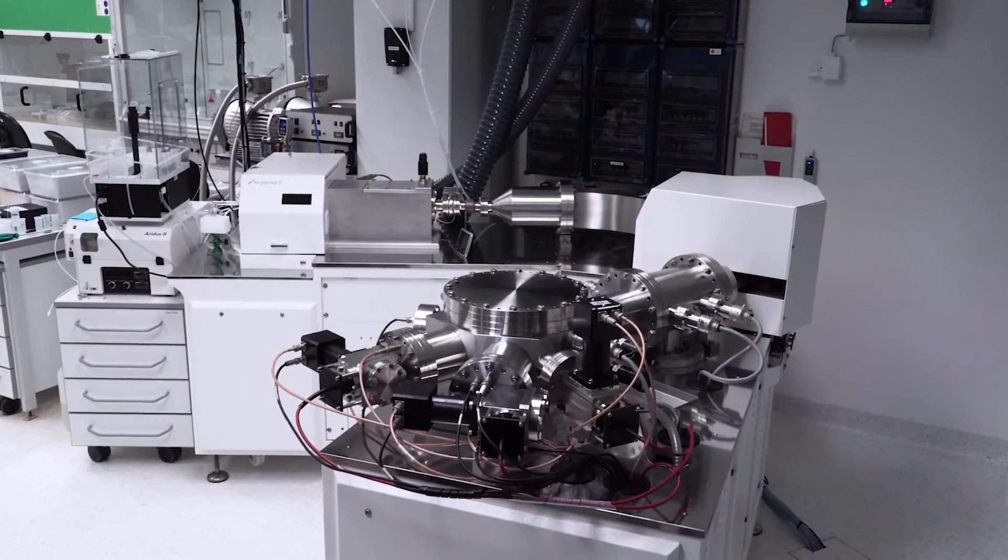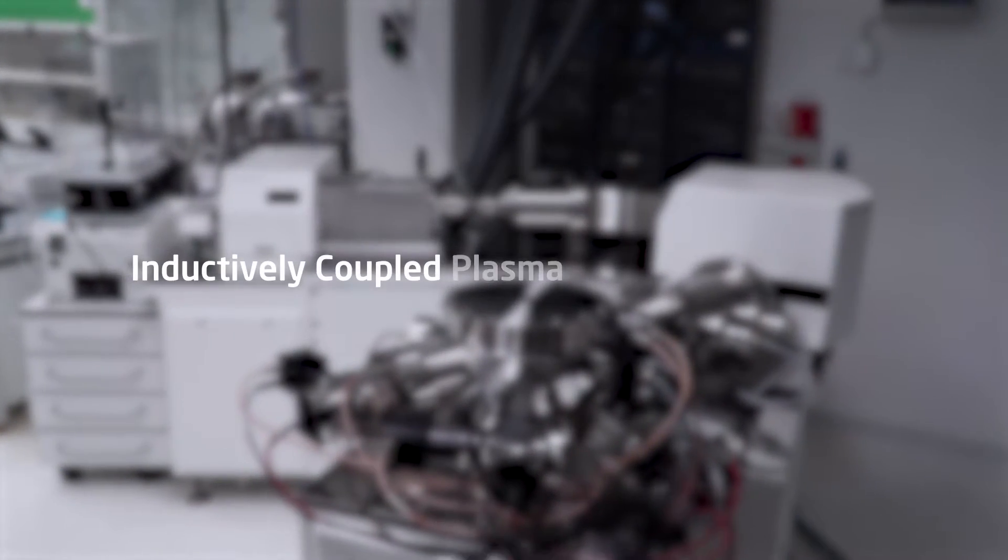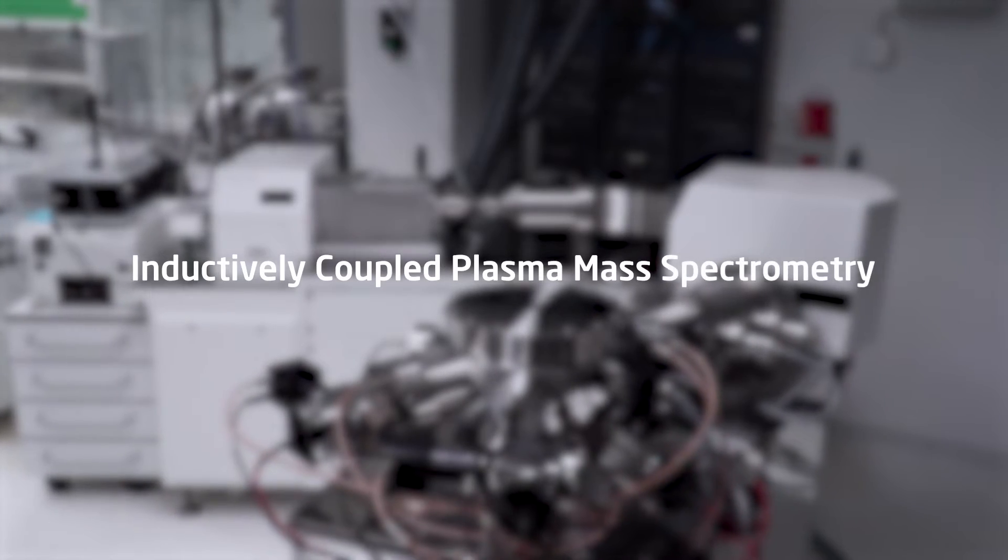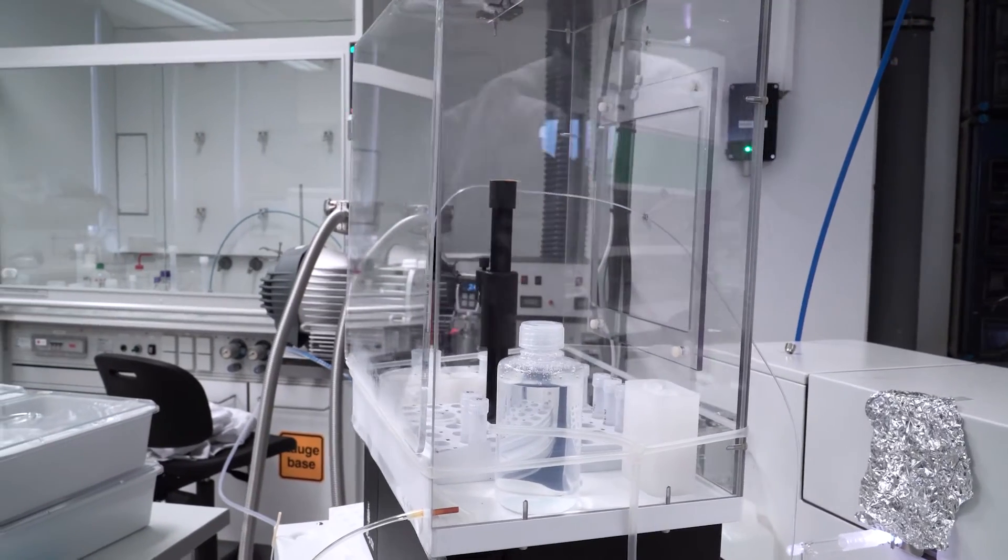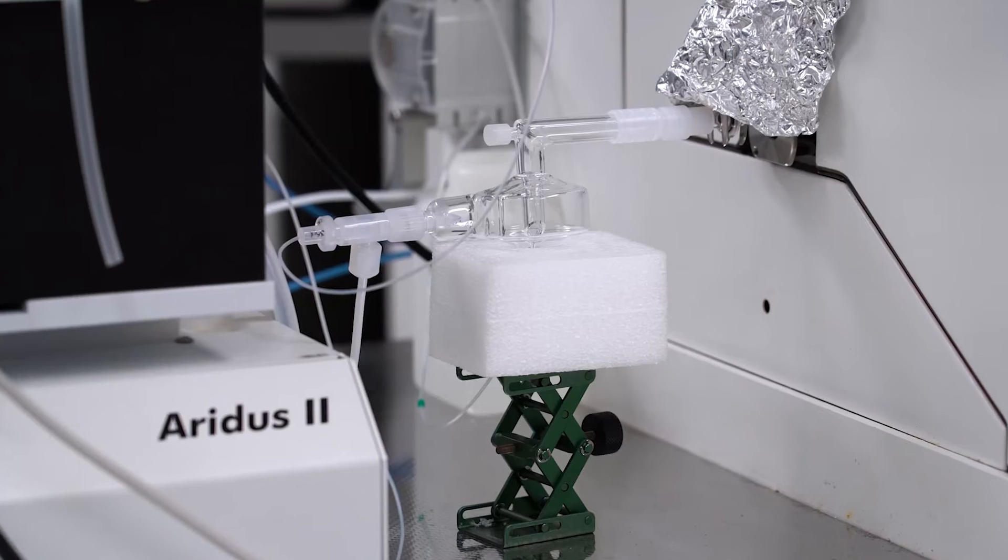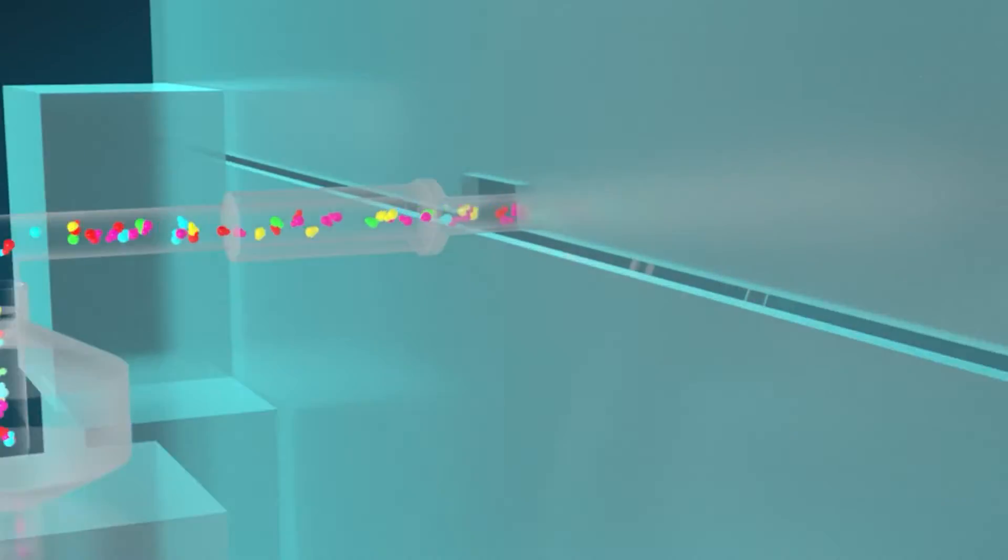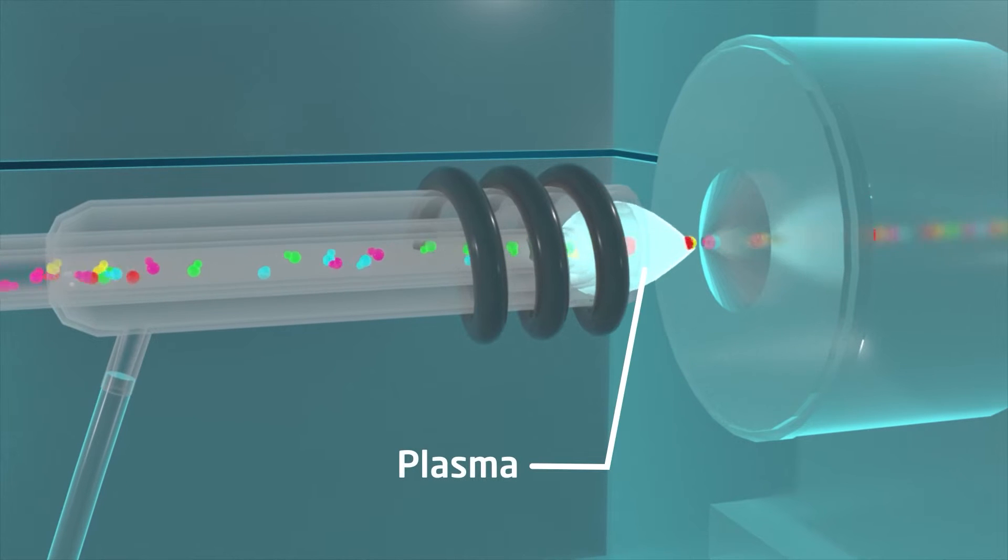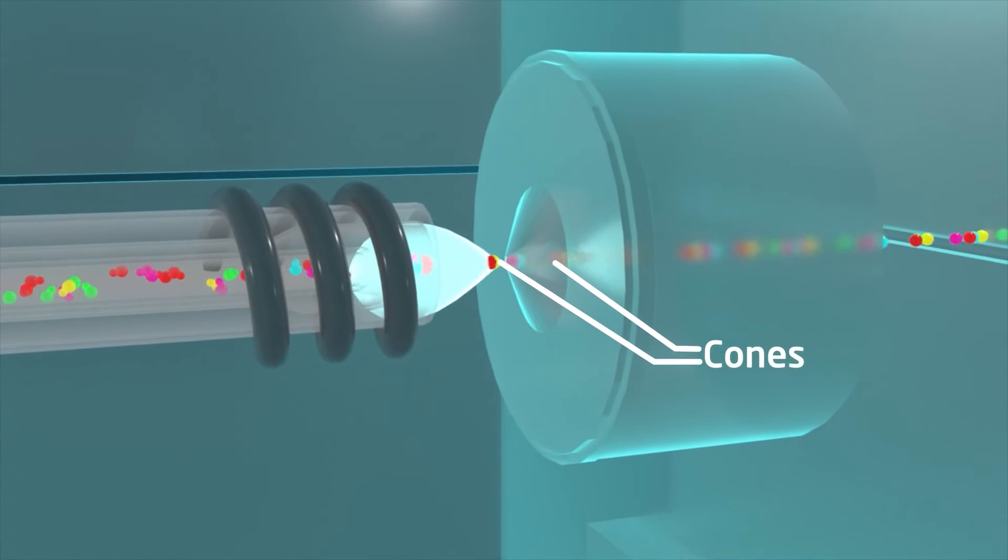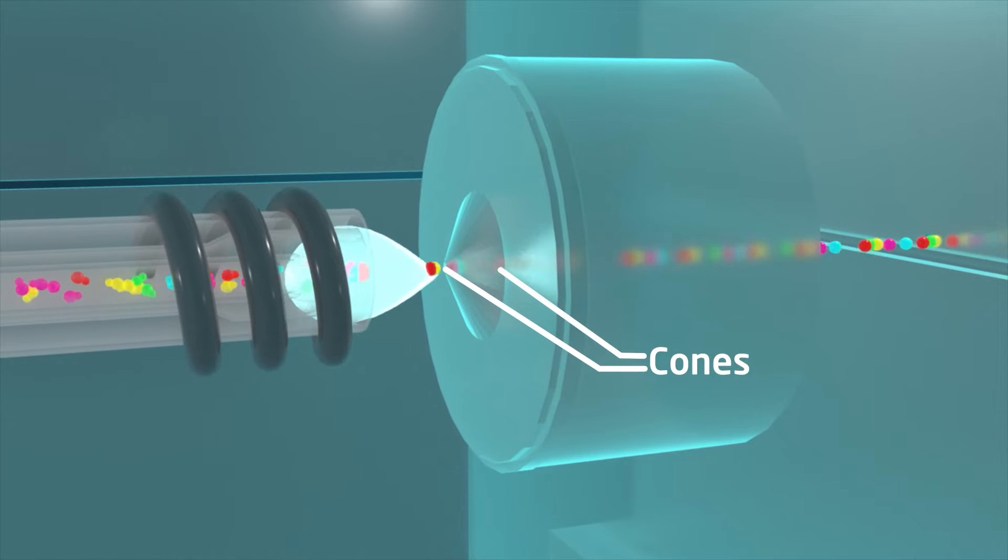ICP-MS stands for inductively coupled plasma mass spectrometry. In ICP-MS, the liquid sample is converted to a very fine spray in a nebulizer. The sample then passes the plasma, which breaks down compounds and strips off electrons from the atoms. Then, it passes through a set of cones that mark the transition to an increasing vacuum.